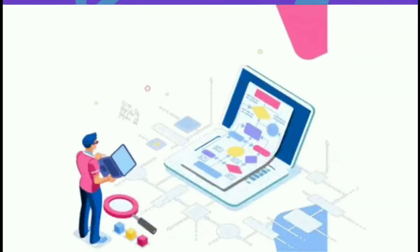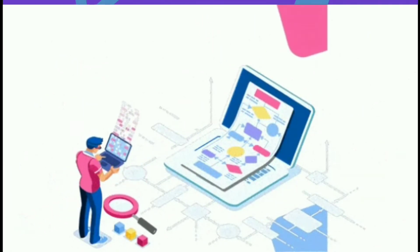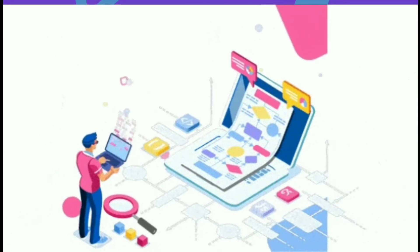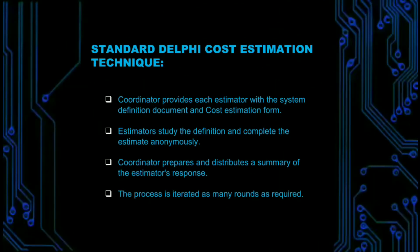Delphi cost estimation is a top-down technique developed at the RAND Corporation in 1948 to gain expert consensus without the adverse side effects of group meetings. A coordinator provides each estimator with a system definition document and cost estimation form. Estimators study the definition and complete their estimates anonymously. The coordinator prepares and distributes a summary of responses, and the process is iterated over as many rounds as required.